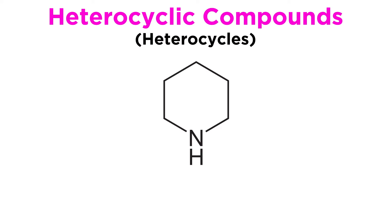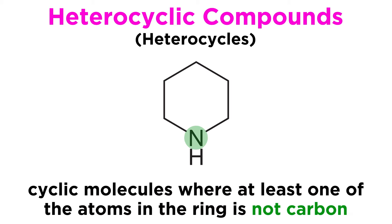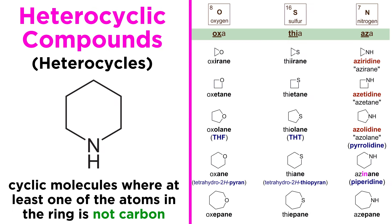Even if the word is unfamiliar to you, we have examined a variety of heterocycles thus far in this organic chemistry series. To refresh your memory, this refers to cyclic molecules in which at least one of the atoms in the ring is not carbon. The other element present in the ring is most commonly either oxygen, sulfur, or nitrogen, or some combination thereof.